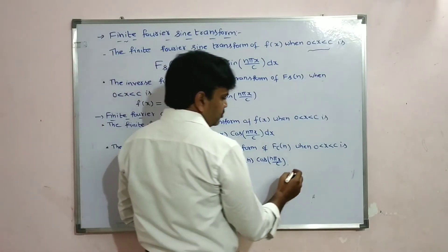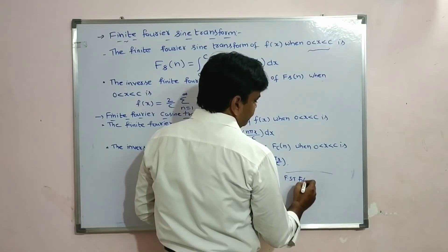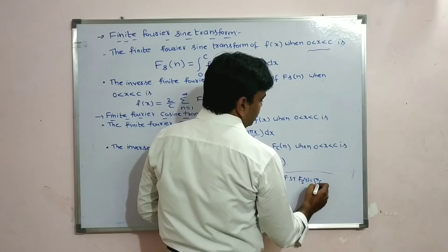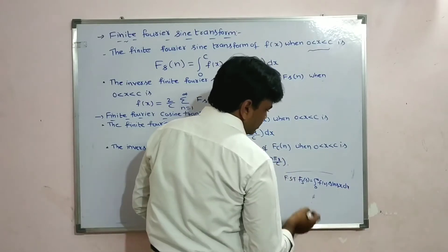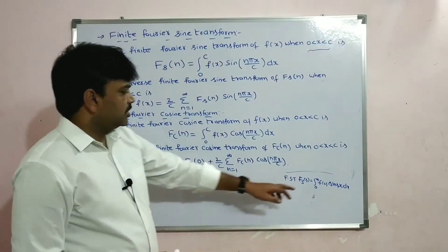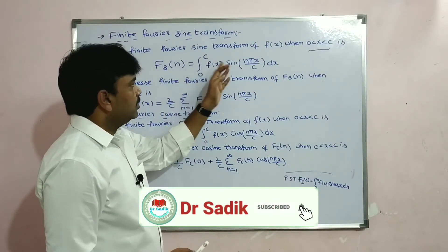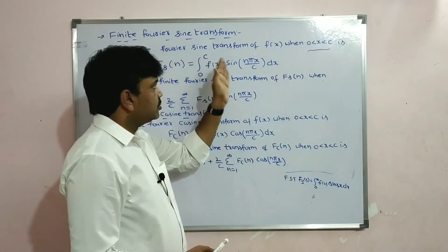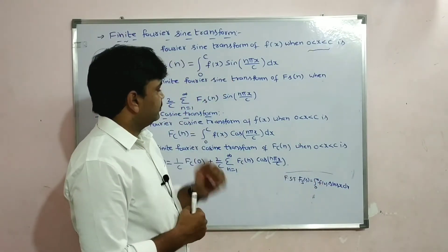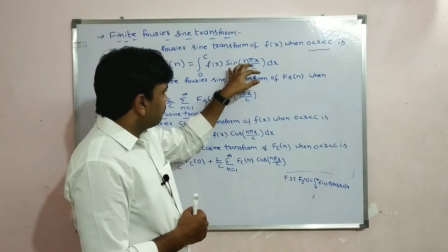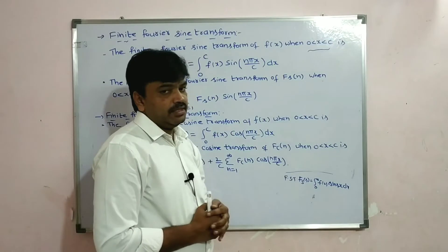To remember this easily: the standard Fourier sine transform of f(x) equals the integral from 0 to infinity of f(x) sin(sx) dx. Here the limits change from 0 to infinity to 0 to c, and sin(sx) is replaced by sin(n·π·x/c), with dx remaining the same.